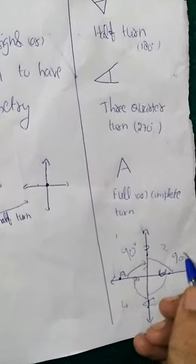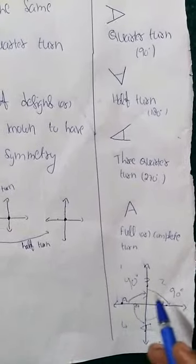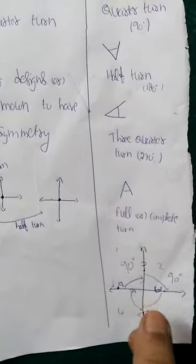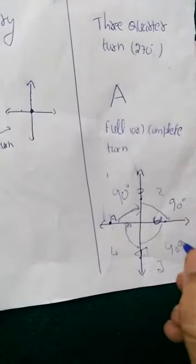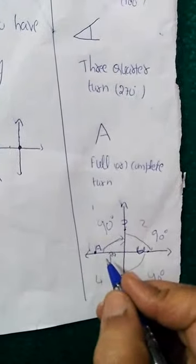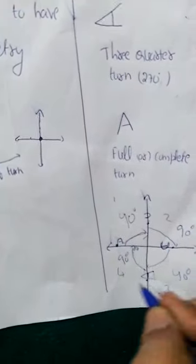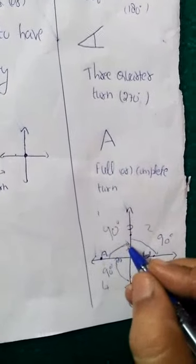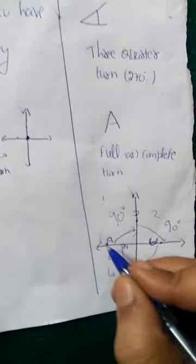After one more quarter rotation — another 90 degrees — that is called a half rotation. Quarter plus quarter equals half rotation. Then rotating one more 90 degrees gives three quarters of rotation. Finally, one more quarter rotation brings A back to its original shape. That is a complete rotation. So: quarter rotation, half rotation, three-quarter rotation, and complete rotation — four quarters make a complete rotation.